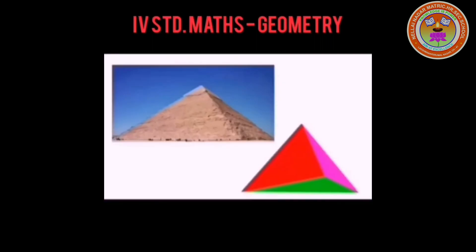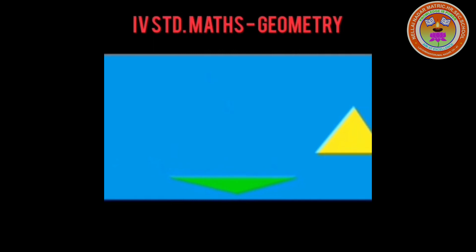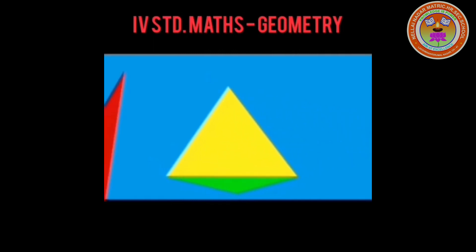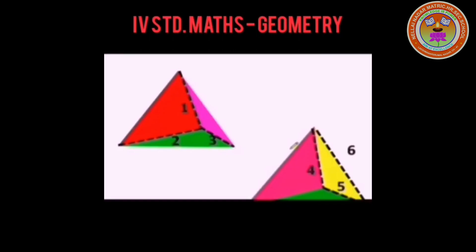The base of a pyramid is triangular, and we can get the 3D pyramid from a 2D triangle. How many faces are there in this pyramid? 1, 2, 3, 4 — there are 4 faces. A pyramid has 6 edges.